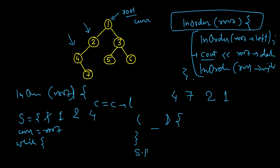When current becomes null, we will start popping from the stack. We pop and also print it — this is equivalent to inorder on left reaching the end and then traversing back. We print the popped element, then make current equal to its right, and again this loop will run where current is not null.